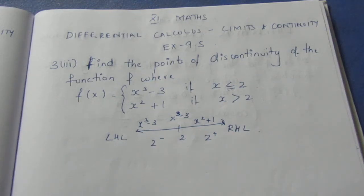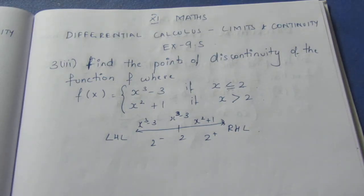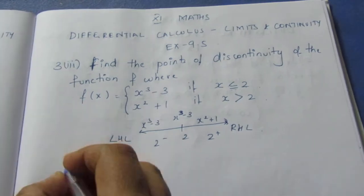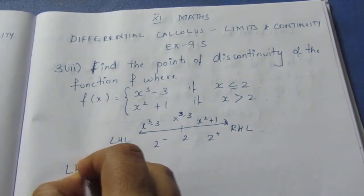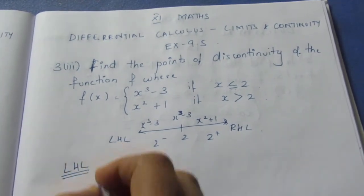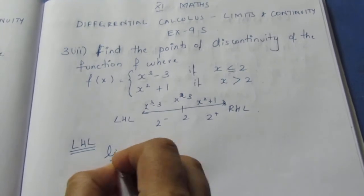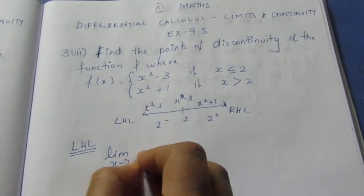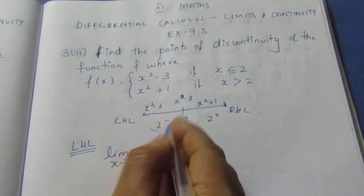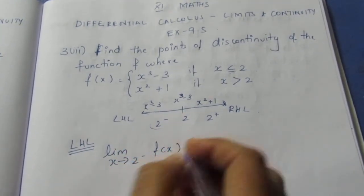If all three are equal, the function is continuous. If the three are not equal, the function is discontinuous. Let's look at LHL. Limit x tends to 2 minus. LHL is at 2 minus. f(x).